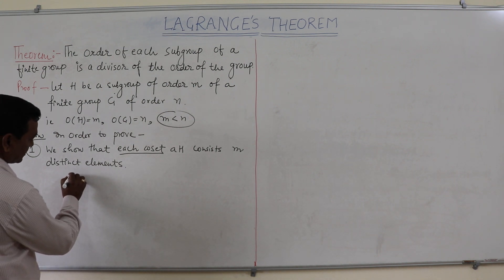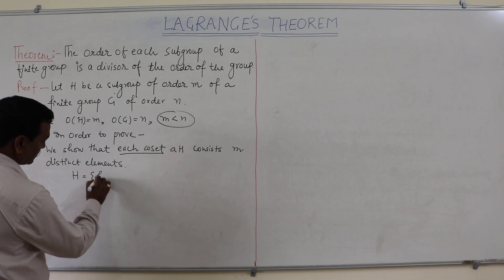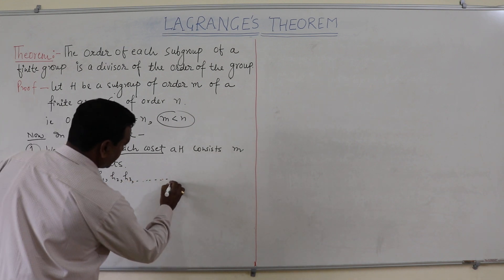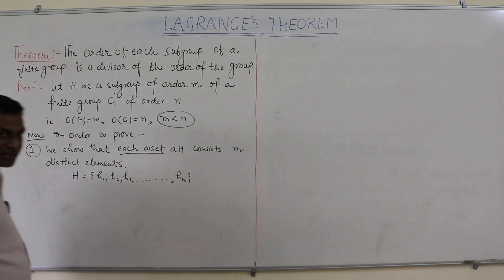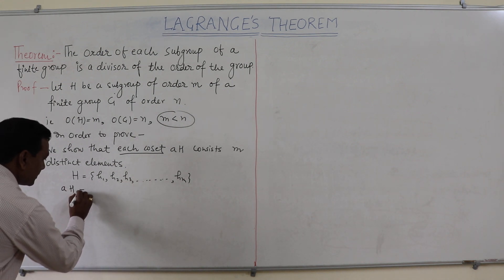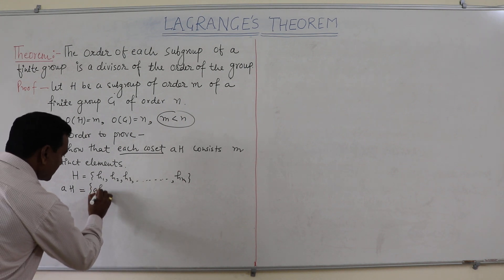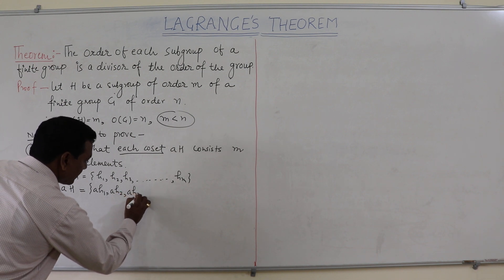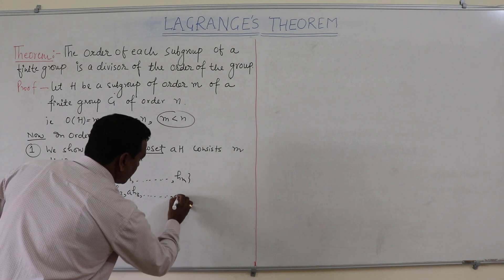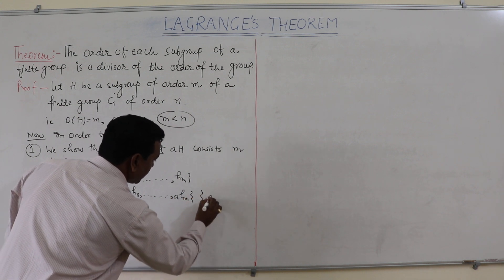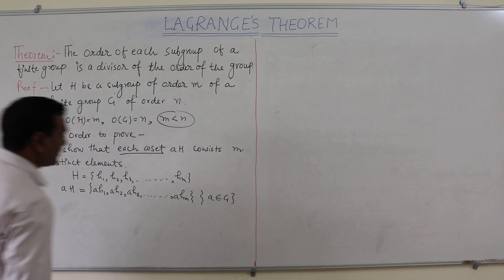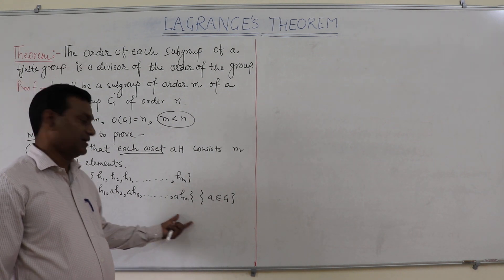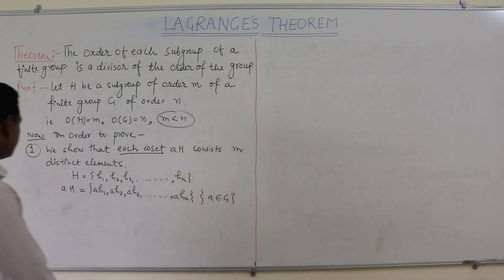H can be written as H1, H2, H3, and so on up to HM. And the left cosets can be written as aH1, aH2, aH3, and so on up to aHM, where a belongs to G. These are the left cosets and these are the M distinct elements.